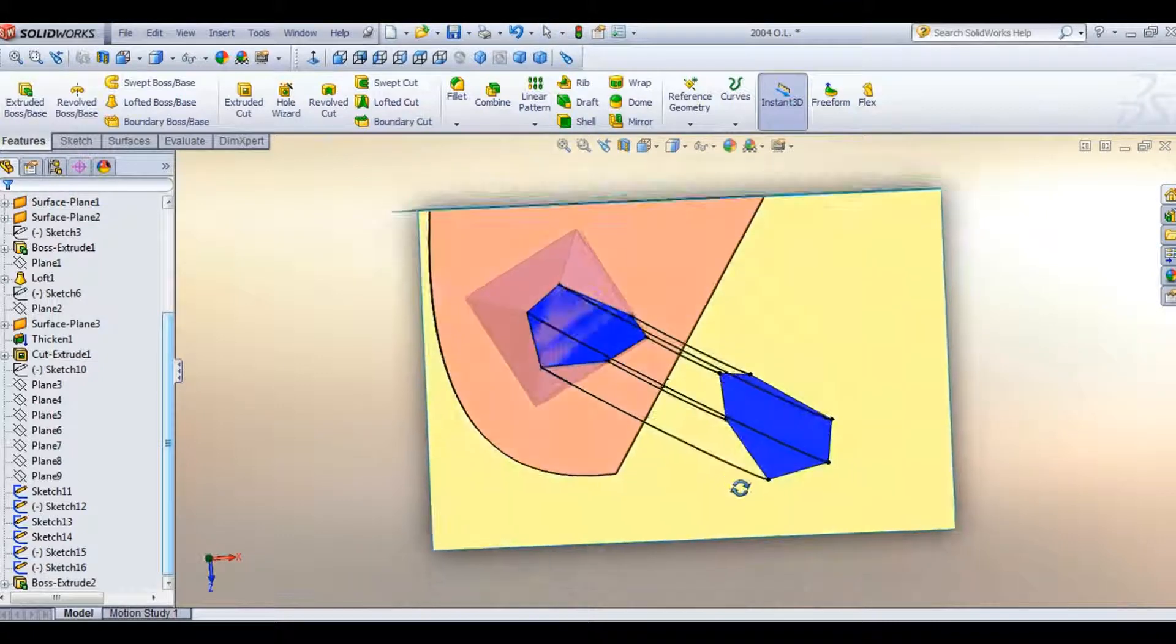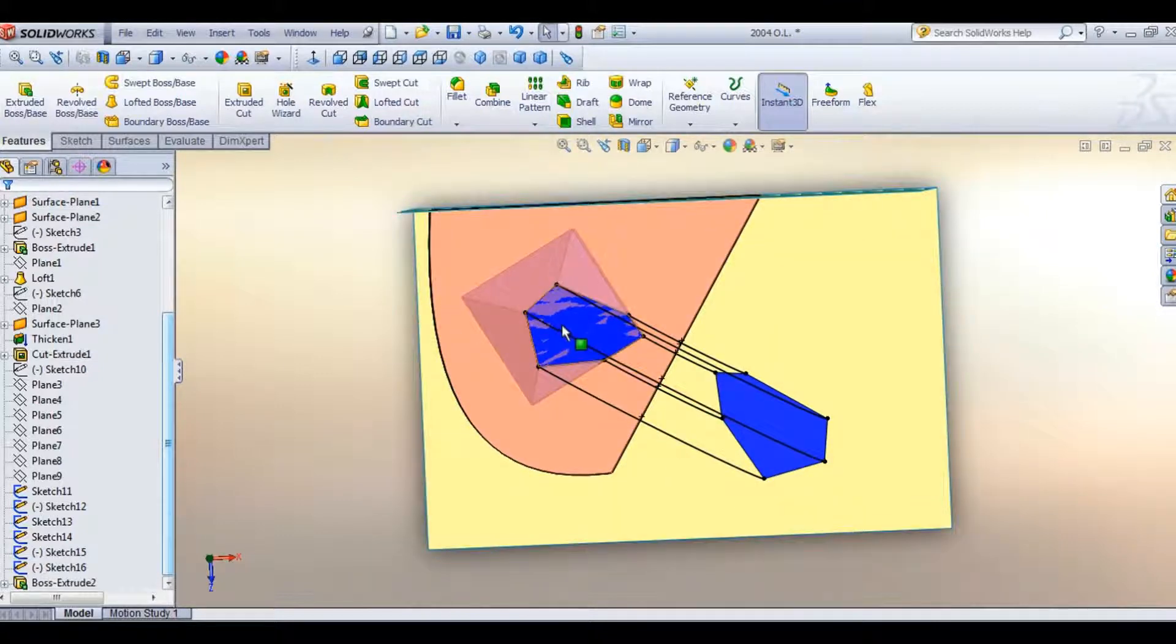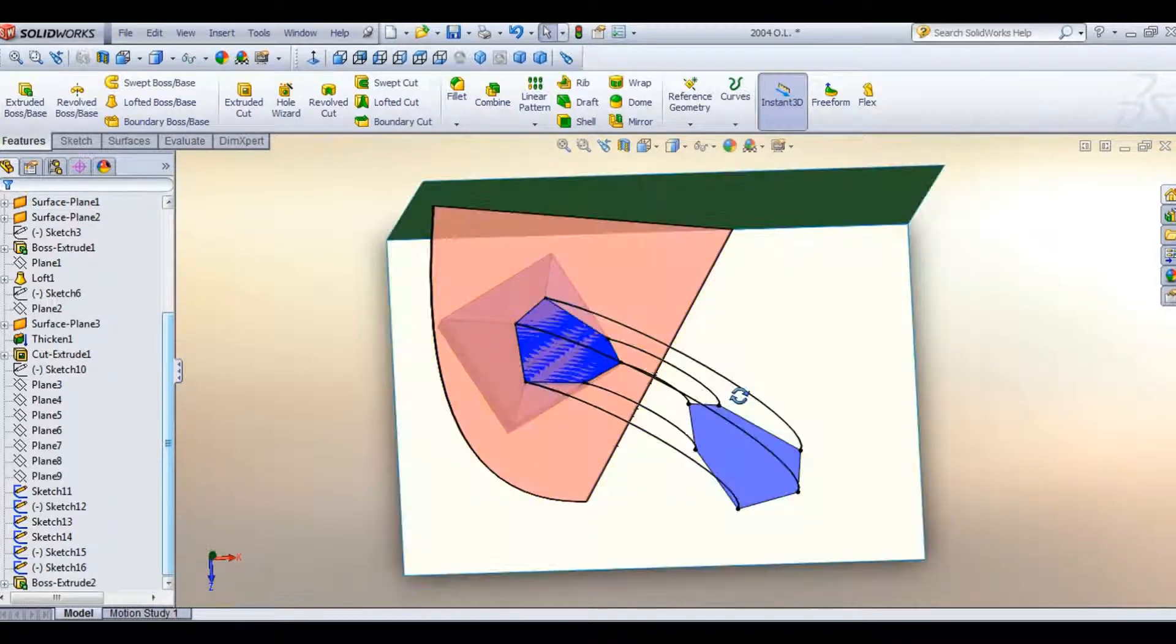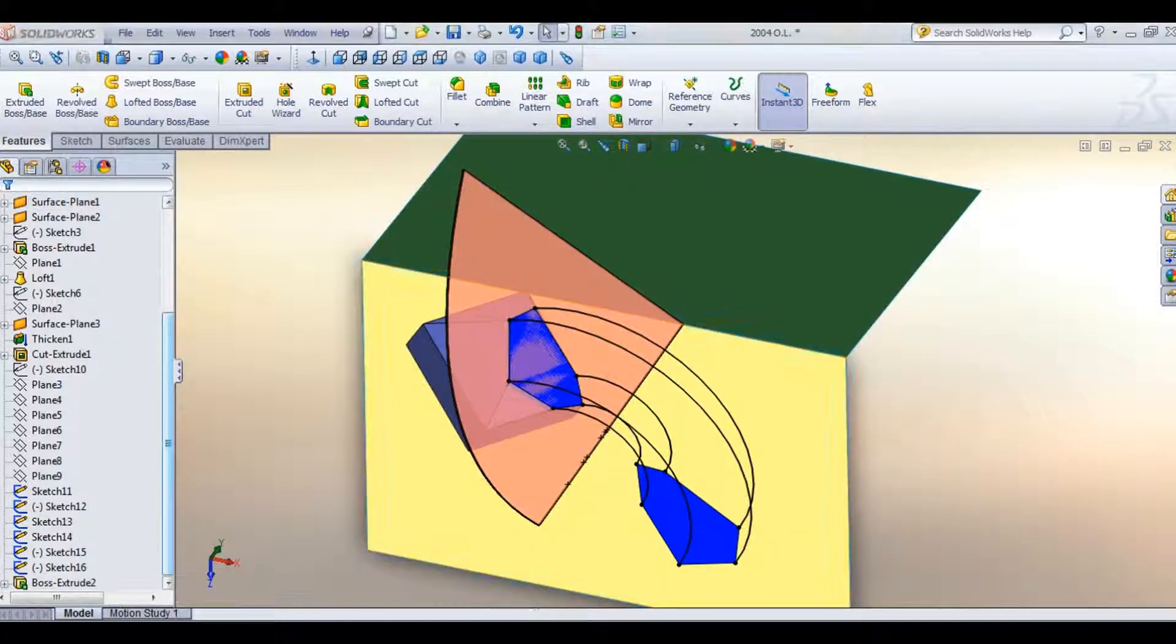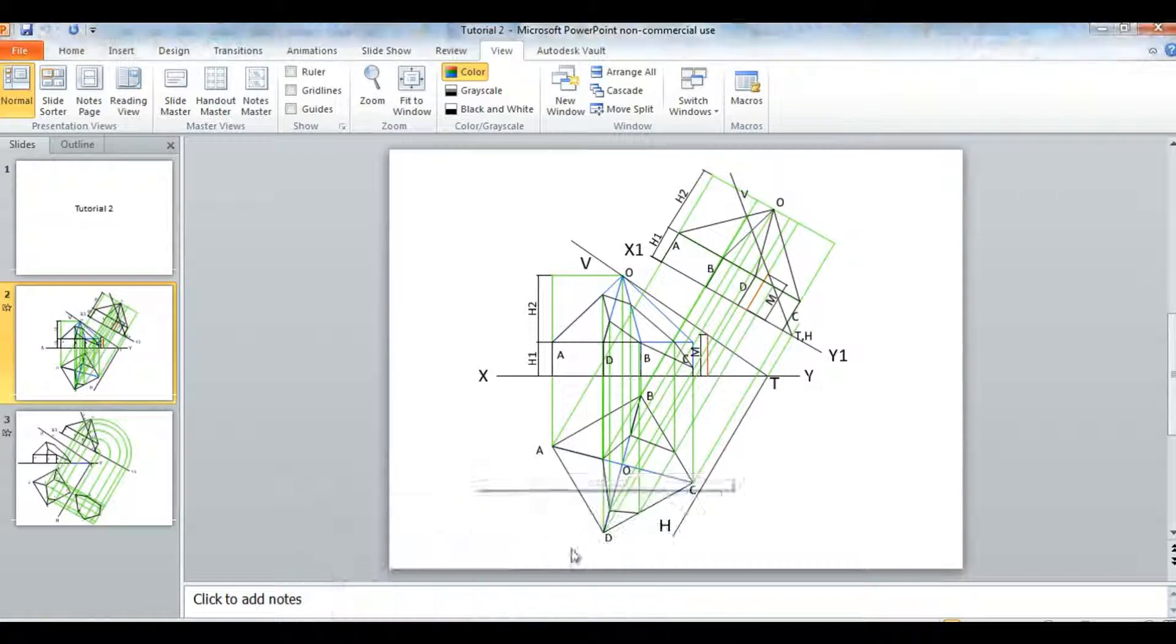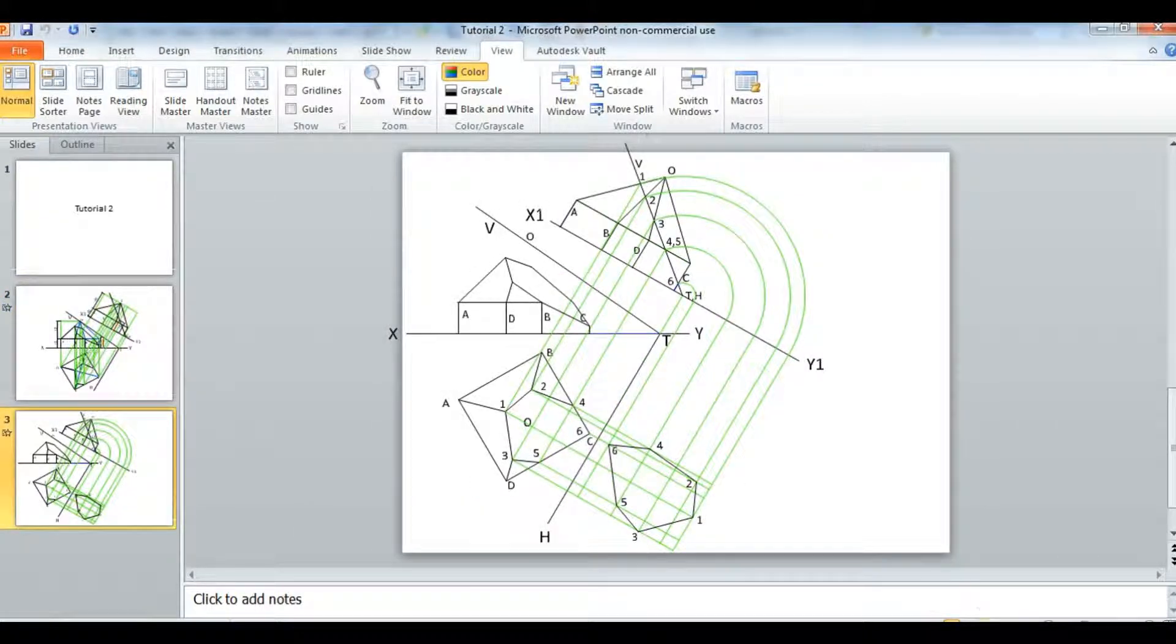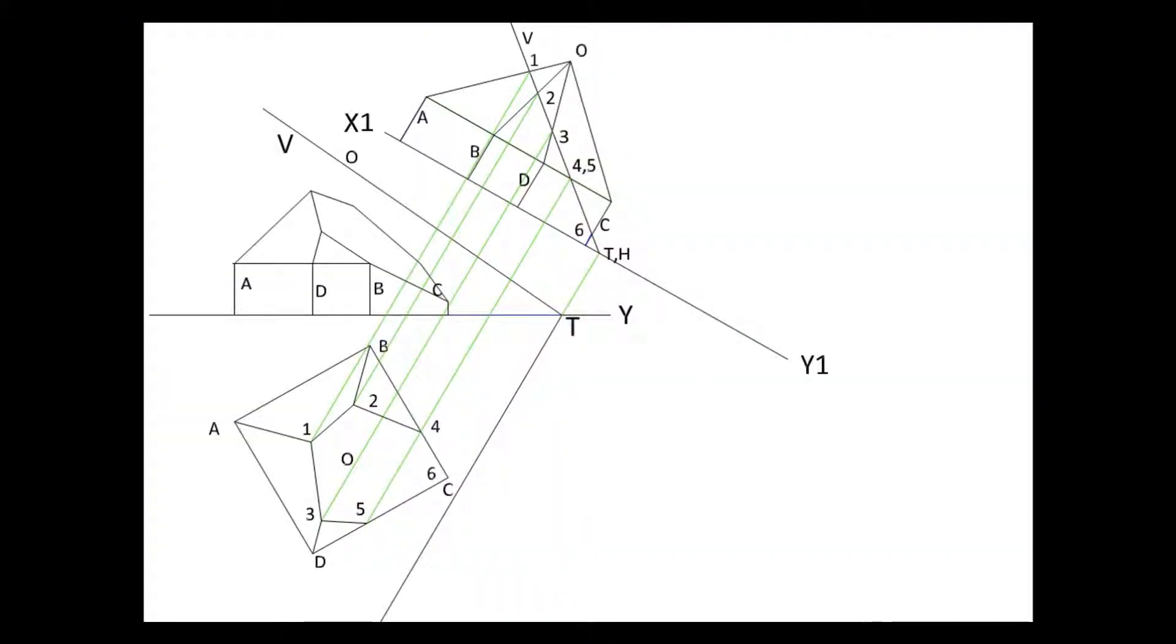And then we're going to see this true shape when we look straight down. Because normally, you can see by looking down here, you can't actually see the true shape of it. You'd have to look in at the side to see that. So to do that on the drawing sheet.